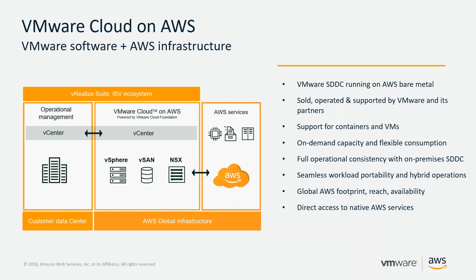What we're doing is taking VMware's flagship compute, storage, and network virtualization products — vSphere, vSAN, and NSX — adding vCenter management on top, and deploying this on Amazon EC2 bare metal infrastructure. This is a bare metal solution, not nested or virtualized. It's the same architecture and operational experience that customers have on-premises, and it allows customers to instantly gain value from that hybrid experience between VMware and AWS.